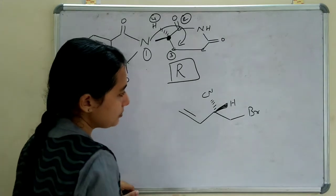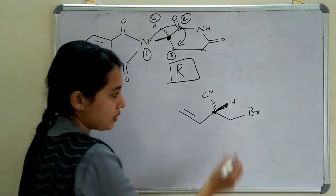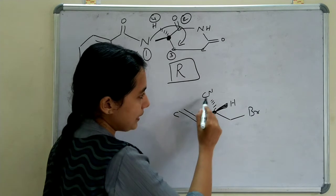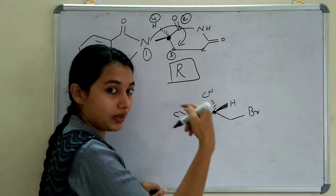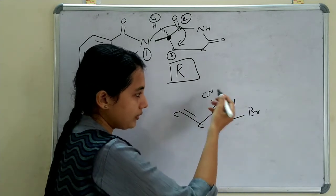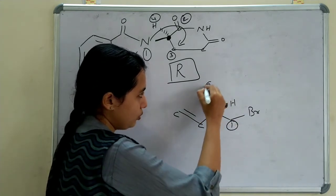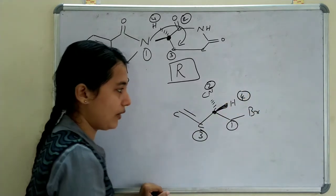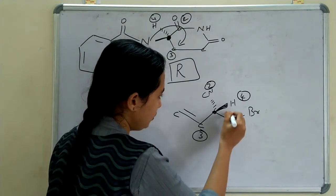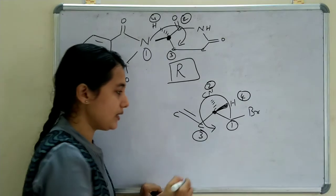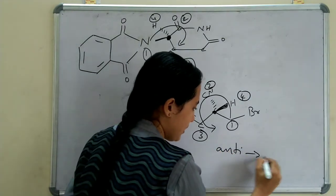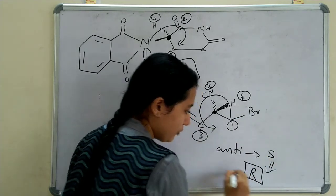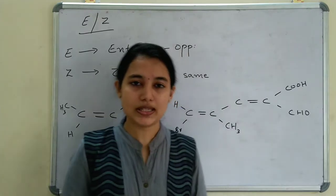Last R/S example: the chiral carbon has substituents C–Br, C–N, hydrogen, and a double-bonded carbon. Bromine is higher atomic number than nitrogen, so C–Br gets 1, C–N gets 2, the double-bonded carbon gets 3, and hydrogen gets 4. Hydrogen is at the above position, so we must reverse. Rotating 1→2→3 is anticlockwise (S), but we reverse because hydrogen is above — S becomes R. The absolute configuration is R.